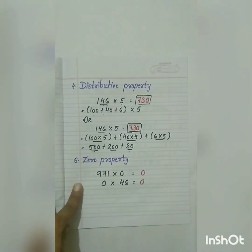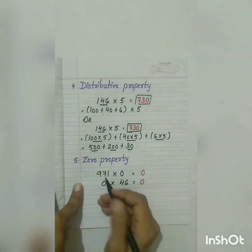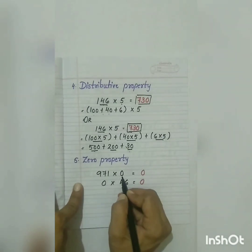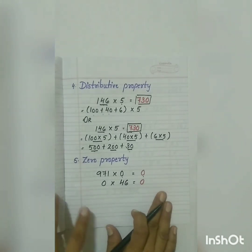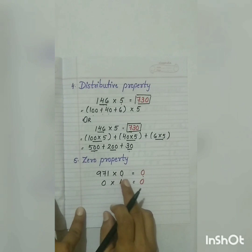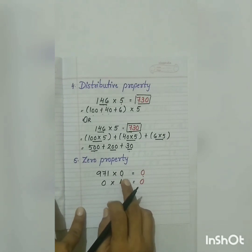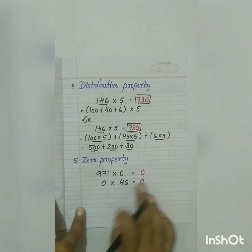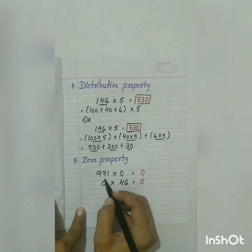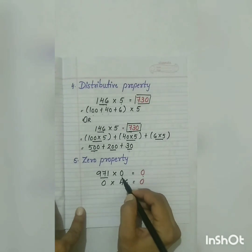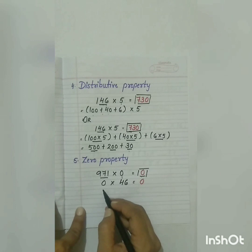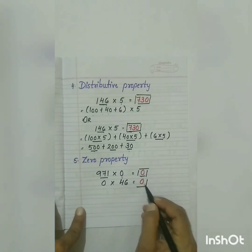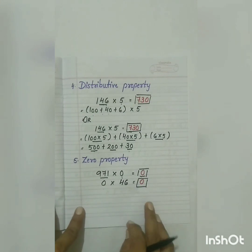The last property is the zero property. Any number multiplied by 0, the answer will always be 0. For example, 971 multiplied by 0, the product is 0. Similarly, 0 multiplied by 46, the answer is also 0. Our product is 0.